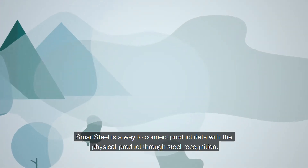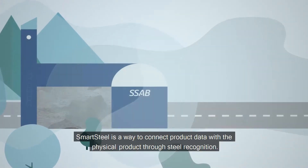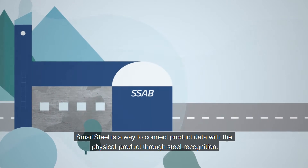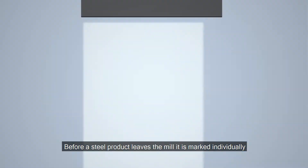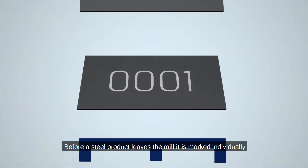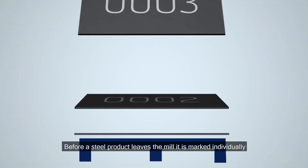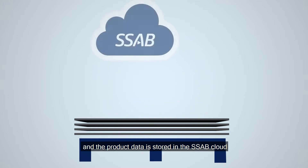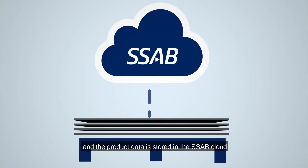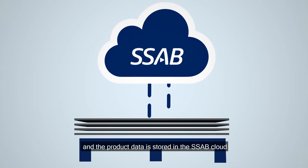SmartSteel is a way to connect product data with the physical product through steel recognition. Before a steel product leaves the mill, it is marked individually, and the product data is stored in the SSAB cloud.